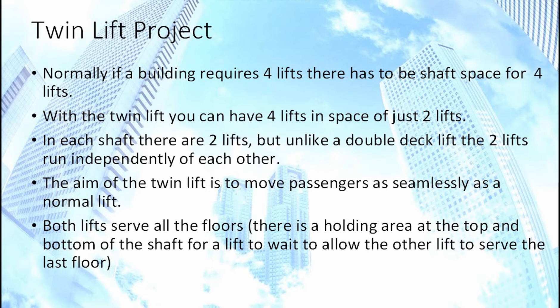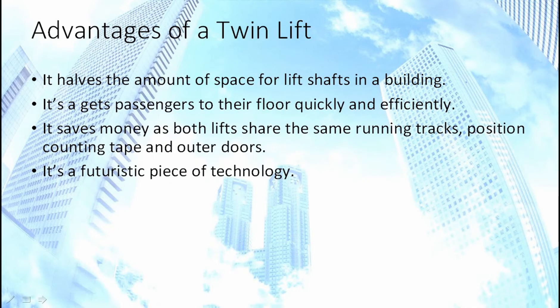The aim of a twin lift is to move passengers as seamlessly as a normal lift. Both lifts serve all floors; there is a holding area at the top and bottom of the shaft to allow one lift to move out of the way of the other so it can serve all floors. Advantages of a twin lift: firstly it halves the amount of space used in a building for lift shafts, which is especially important in London where building space is at a premium. Also it gets passengers through their floor quickly and efficiently.